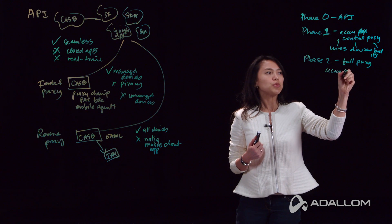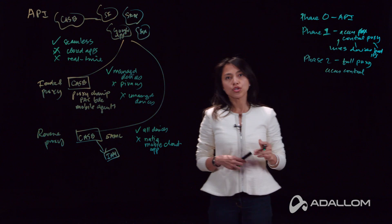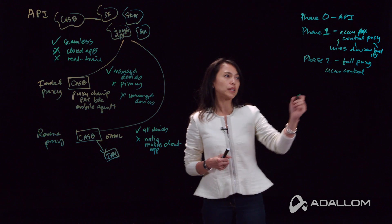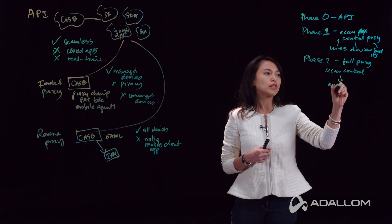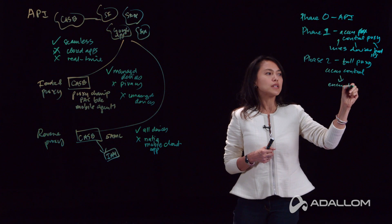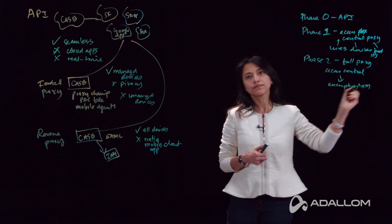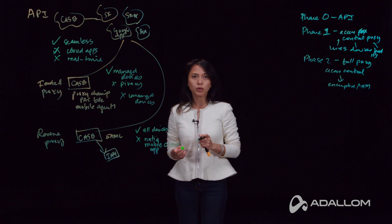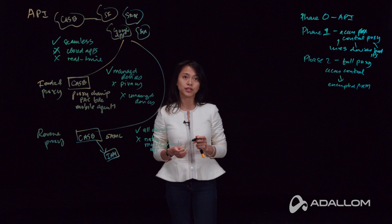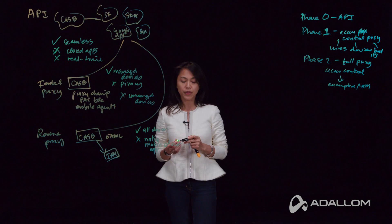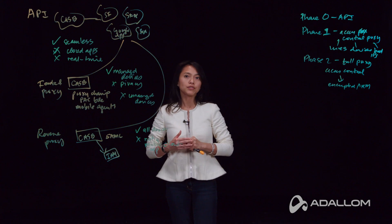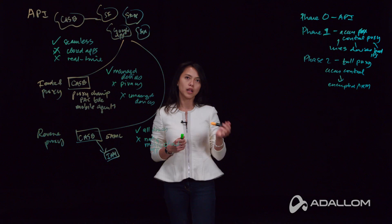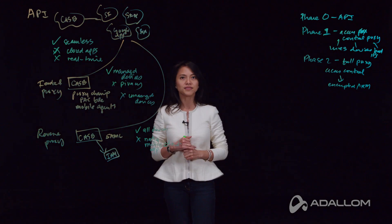For example, you might allow a user on an unmanaged device to access a cloud application, but ensure that the document is encrypted with IRM. That concludes our topic today on deployment modes for cloud access security brokers. I hope you now have a good understanding of the different deployment options as well as the AdLam approach. Thanks.